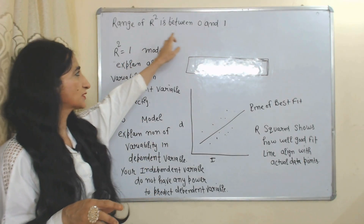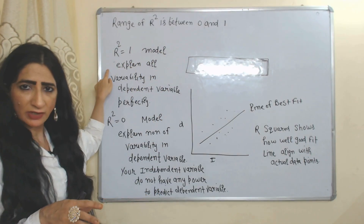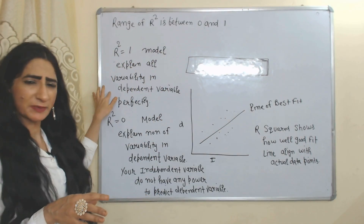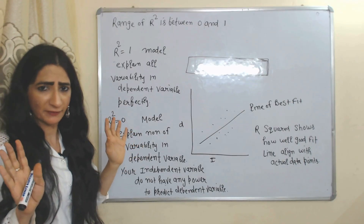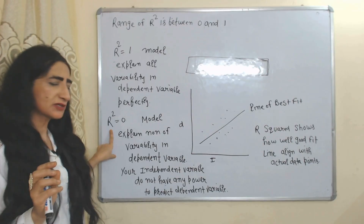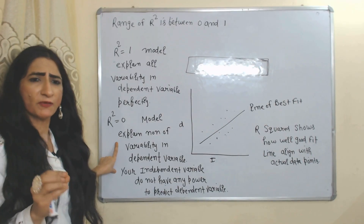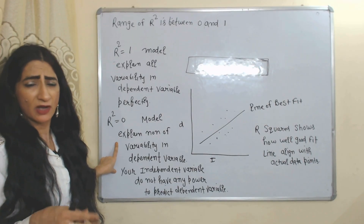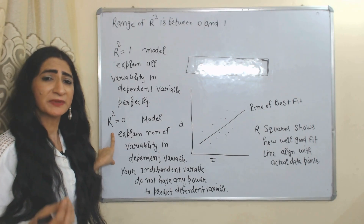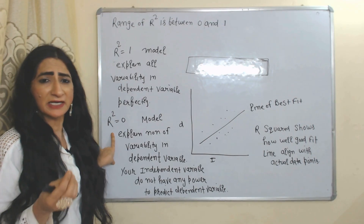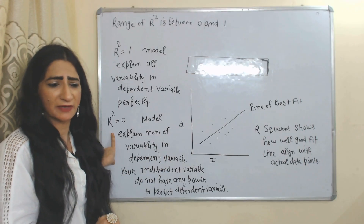The value of R-squared is between 0 and 1. If R-squared equals 1, that means the model explains all variability in the dependent variable perfectly. If R-squared equals 0, that means the independent variable has no power to predict the dependent variable.